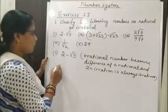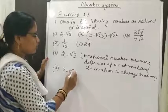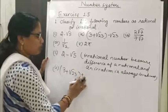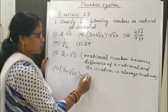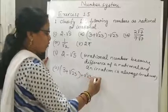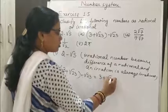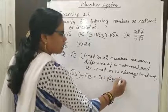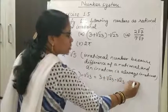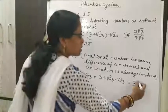Bit 2: (3 + √23) + (−√23). If we open the bracket, that will be 3 + √23 − √23, which equals 3. So 3 is a rational number.